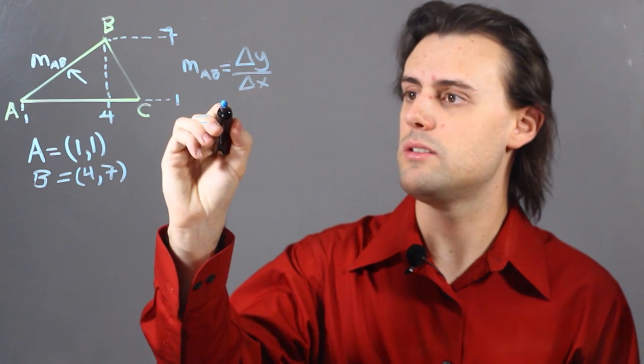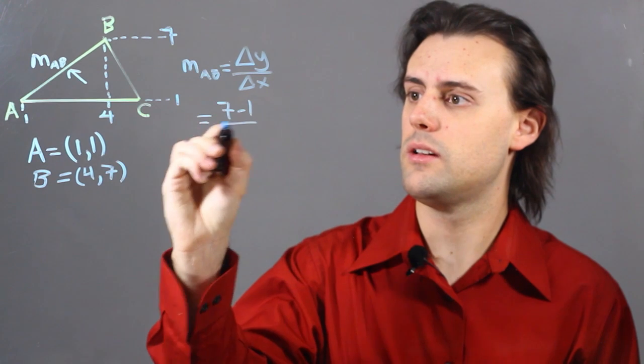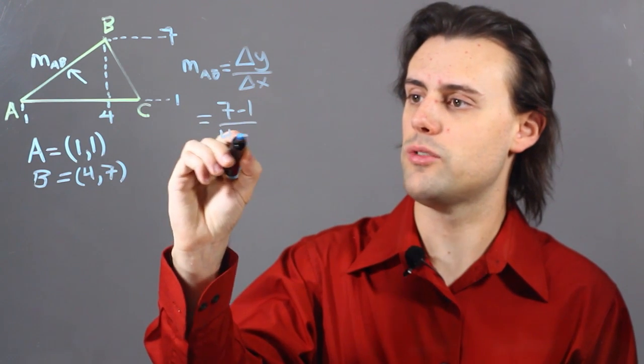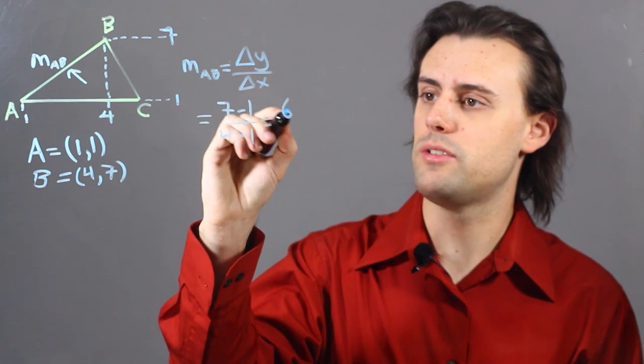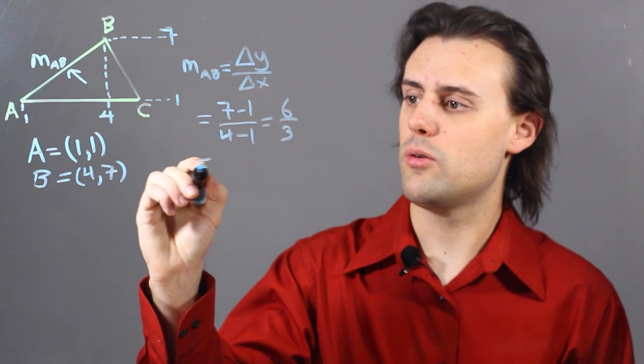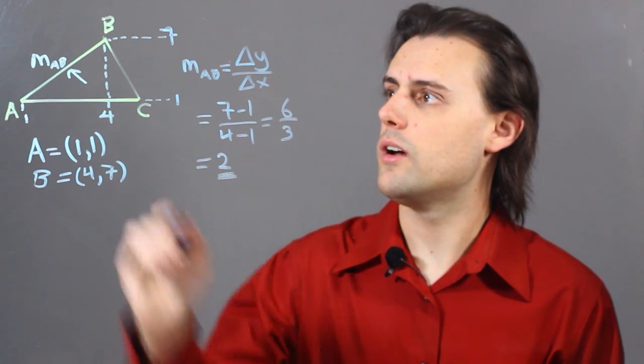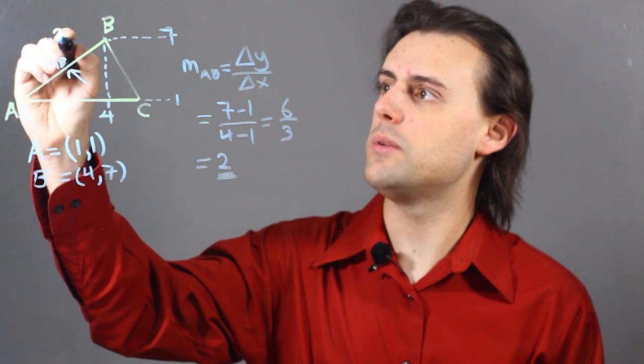which here is 7 minus 1 divided by 4 minus 1, which is equal to 6 over 3, or simply 2. So, I have calculated this slope to be 2.